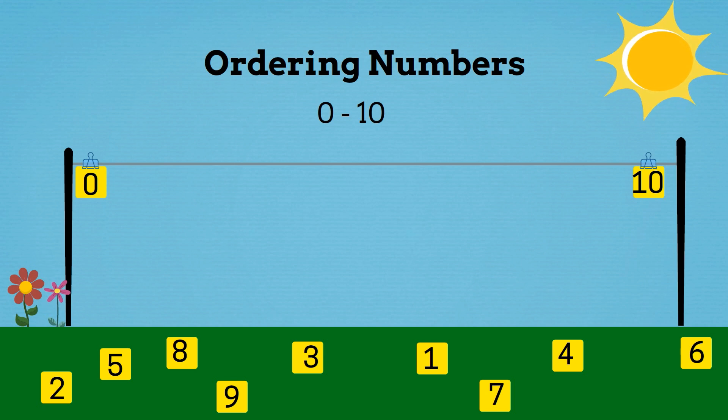Now what number could we put in the middle? What number is halfway between 0 and 10? It's 5. 5 is halfway between 0 and 10. So we'll put 5 in the middle.